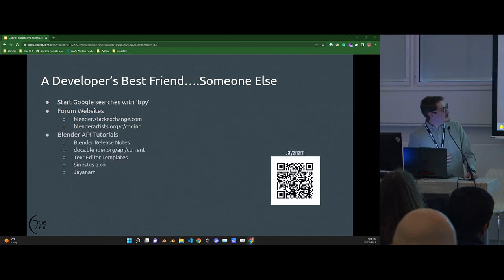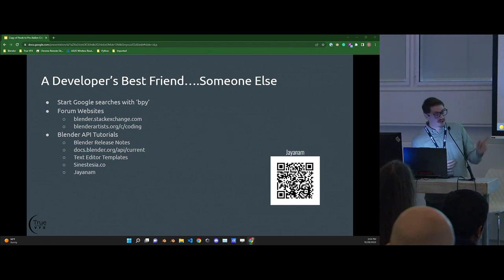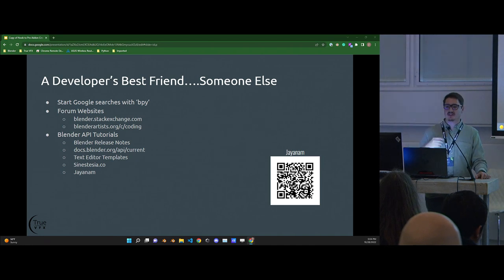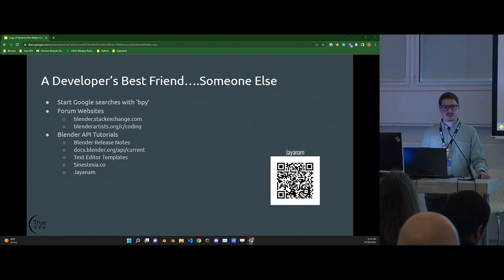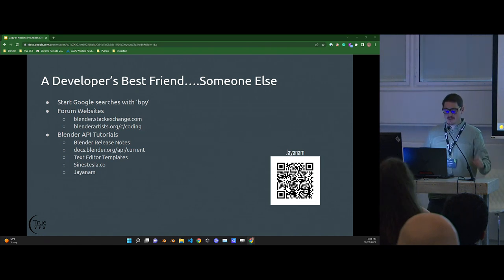Third is the Blender API tutorials. One thing inside there is the Blender release notes. When Blender releases a new version, there's an actual category for Python and the text editor. Inside that, they release all the Python changes. Sometimes they even show you how to use the new feature — like the most recent one I found was search added to string properties. Reading the release notes will keep you up to date.